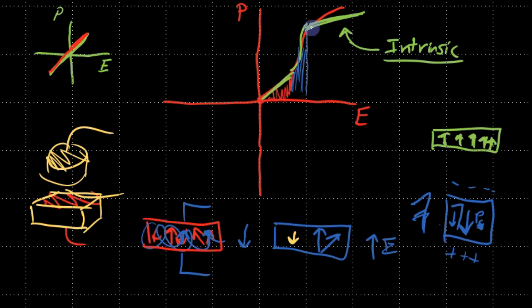The low-field region also has domain wall switching, but it's happening in a largely reversible, linear fashion, which keeps the response linear. In the intermediate region, we're actually switching large numbers of domains, which is accompanied by a steep change in polarization for an applied electric field. Now that we've applied such a large electric field to this material and we start reducing it, something interesting happens — we go back down a different route.